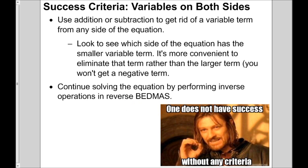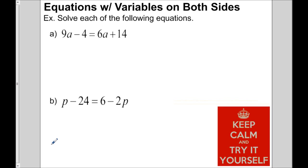That's the success criteria — you should follow it. Give these two examples a shot: find the smaller variable term, get rid of it, and then solve the equation as you normally would. Pause the video and give it a shot, then when you're ready to see the solution press play.